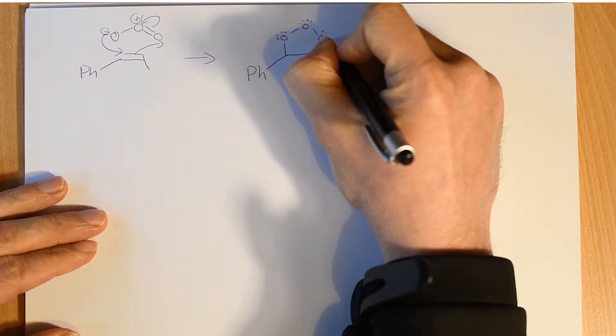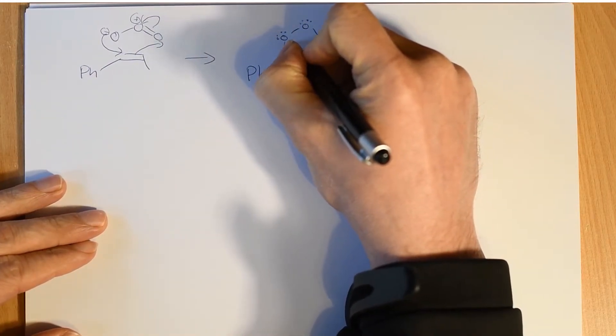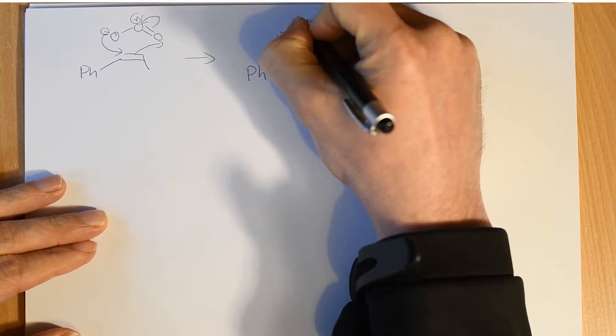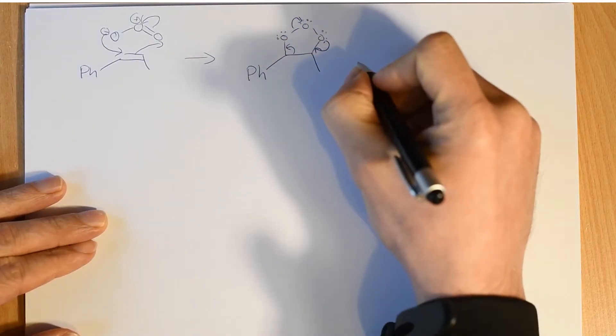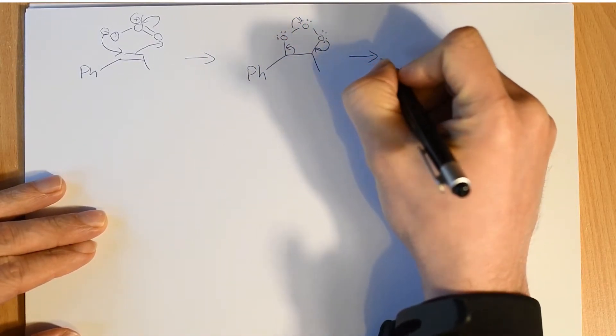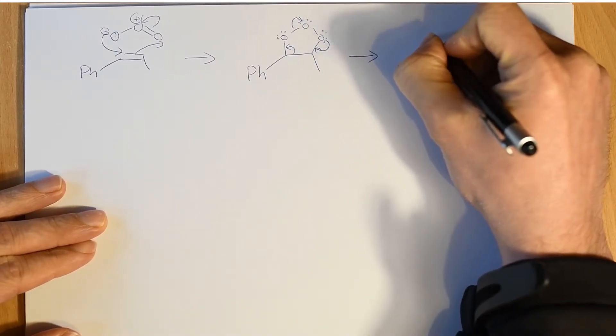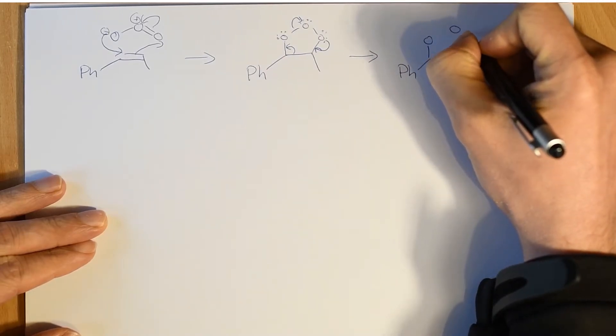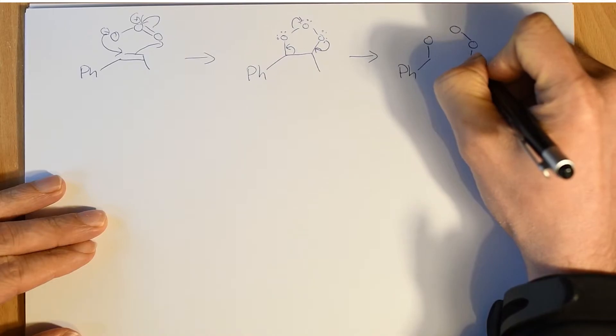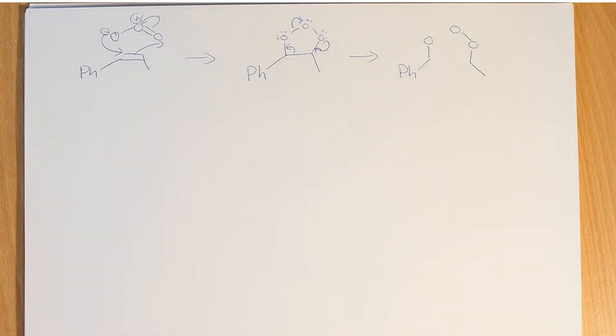And we can do that by just pushing the pairs of electrons around. And again, if we follow our usual rules, then draw it exactly as it was, except for what has been moved by an arrow.